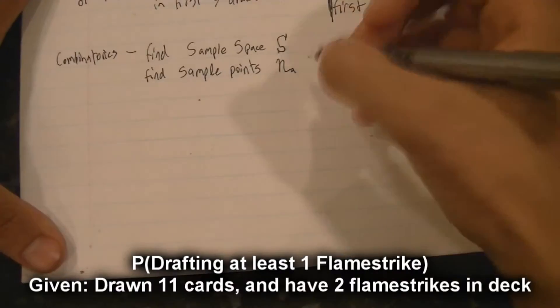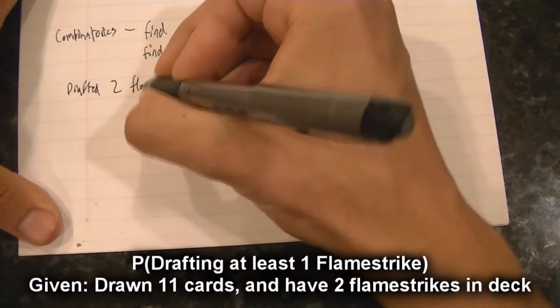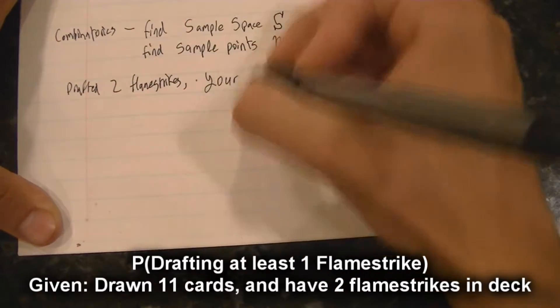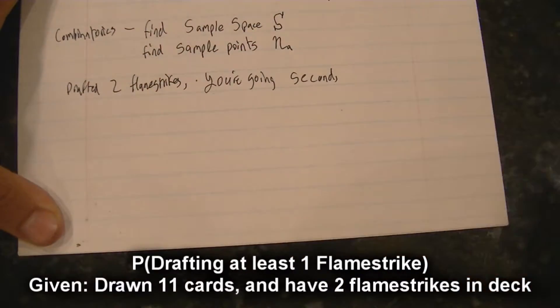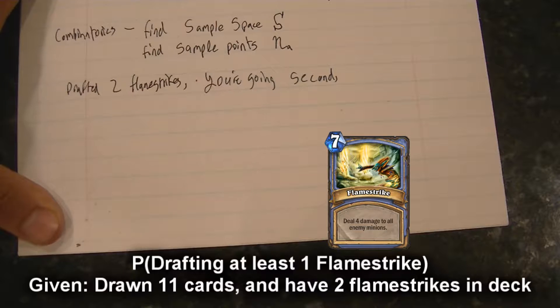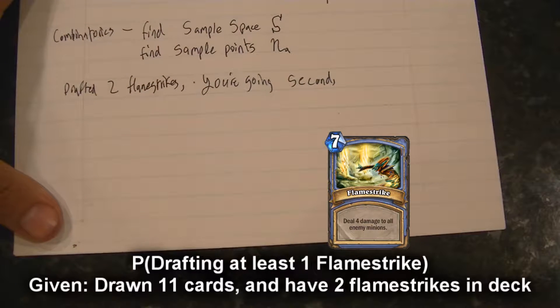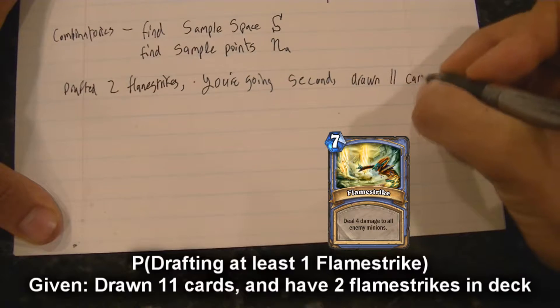So here is the problem. You're going second and it just hit turn seven so you've drawn 11 cards and you want to know the probability that you've drafted a flamestrike by now. And let's say you have two flamestrikes in your deck.